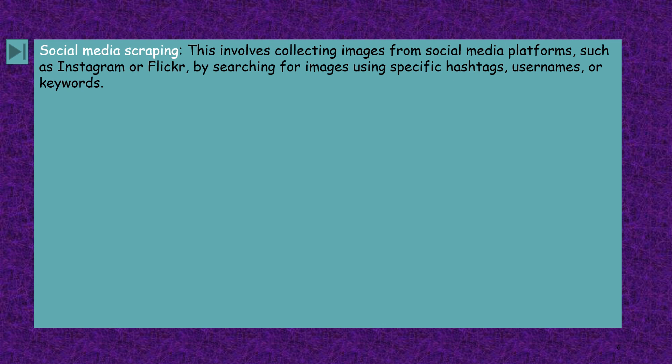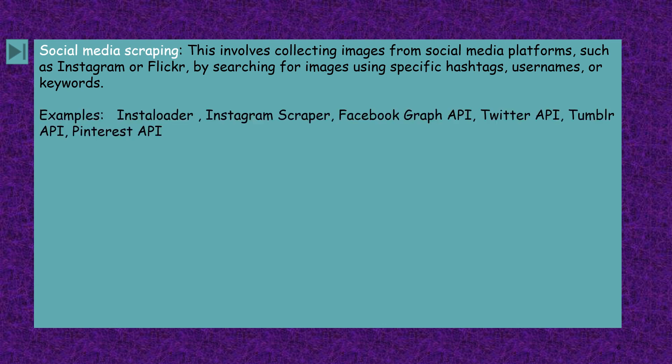The next one is social media scraping. This involves collecting images from social media platforms such as Instagram or Flickr by searching for images using specific hashtags, usernames, or keywords. Examples are InstaLoader, Instagram Scraper, Facebook Graph API, Twitter API, Tumblr API, and Pinterest API.